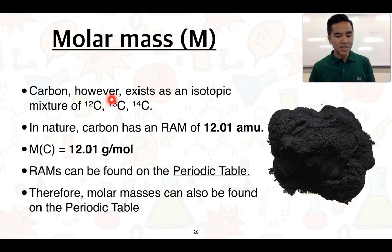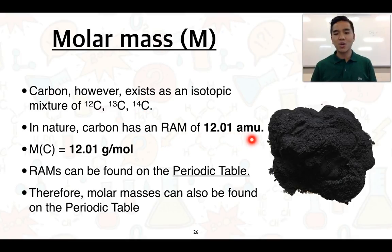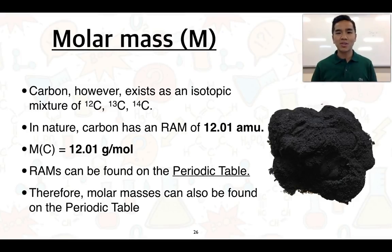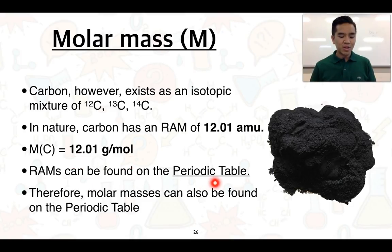However, carbon exists as a mixture of isotopes — carbon-12, 13, and 14 — and its relative atomic mass is actually 12.01 amu. Applying the same idea, the molar mass of carbon in nature equals 12.01 grams per mole, reflecting the weighted averages of all isotopes present. Because we can directly link the relative atomic mass to the molar mass, we can use the periodic table to find the molar mass values for various elements.